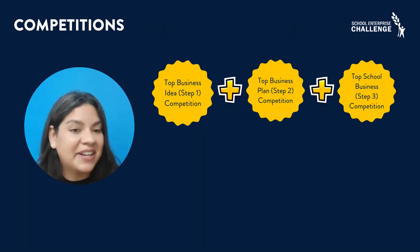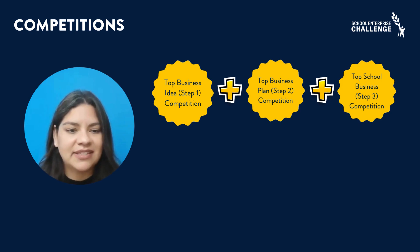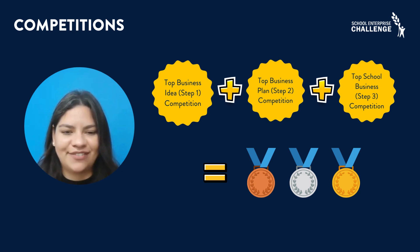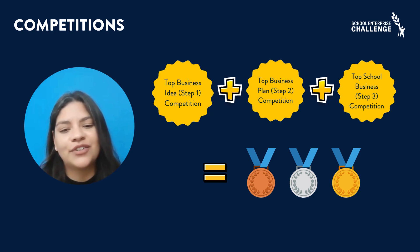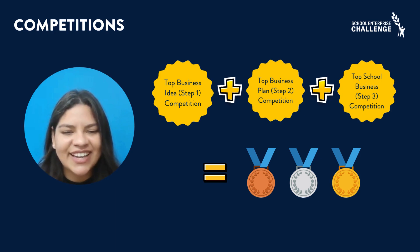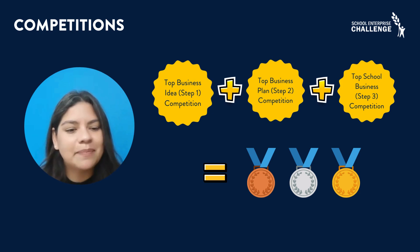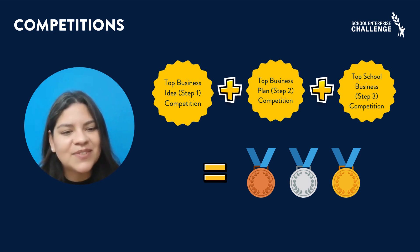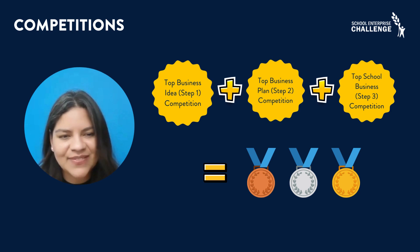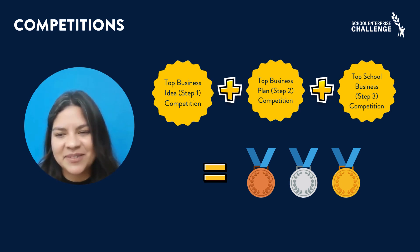If your team participates in all three steps of the program competitions — business idea, business plan, and annual report — you will receive a certificate. The level of your certificate, bronze, silver, or gold, depends on the quality of your submissions. You will also get a digital badge to honor your achievement. Plus, participating in all three-step competitions opens up more opportunities for your team to shine in additional competitions. So keep an eye on this section and get ready to showcase your entrepreneurial skills.